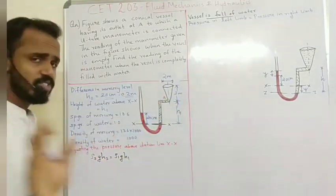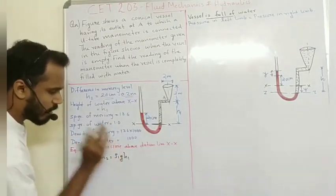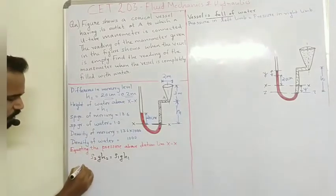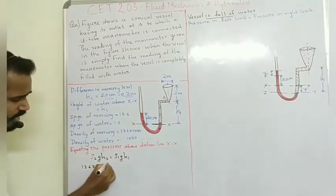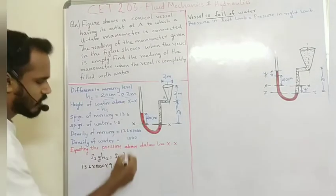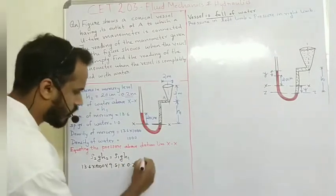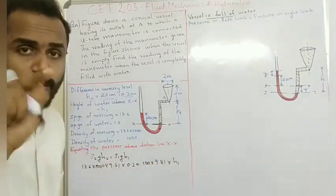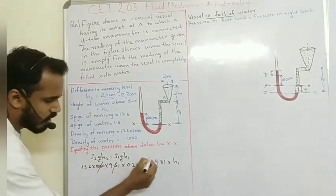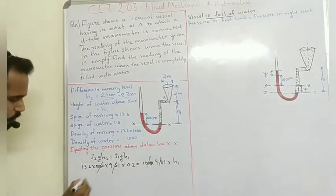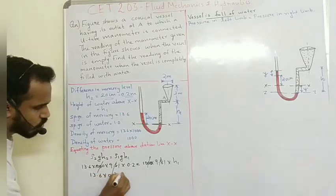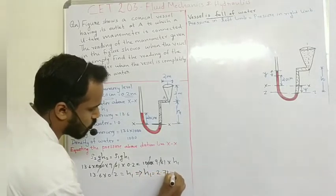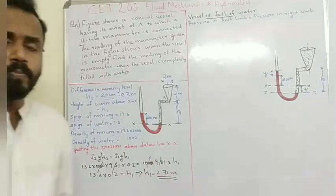Balancing the pressure: ρ1·g·H1 on the right limb equals ρ2·g·H2 on the left limb. So 13.6 × 1000 × 9.81 × 0.2 = 1000 × 9.81 × H1. Solving, H1 is equal to 2.72 meters.